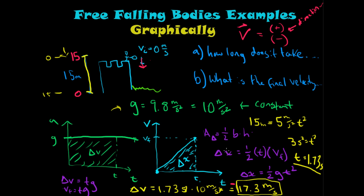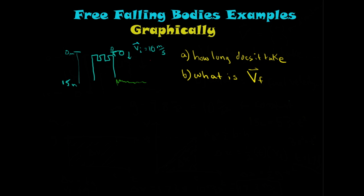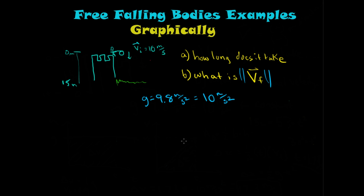For the second problem, that same guy on his 15-meter castle is now throwing a stone downward at 10 meters per second. The origin is set at his position (zero meters) and the ground is 15 meters below. We just want the magnitude of the final velocity and the time to hit the ground, using positive values since acceleration increases velocity in the downward direction. Gravity is again approximated as 10 m/s².